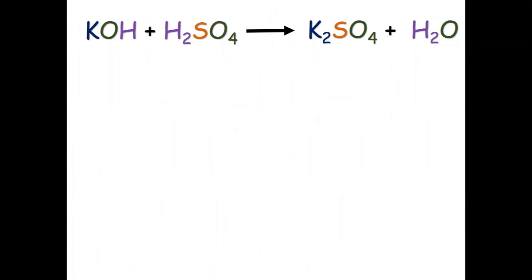Again, we start by writing the symbols for all elements involved under the arrow. If there is a metal involved, like potassium in this case, I always start with that — so we put K for potassium first. Then I look for any other elements besides oxygen and hydrogen, which here is sulfur. Second to last I take oxygen, and finally hydrogen, which I always write last because it is the easiest to balance.